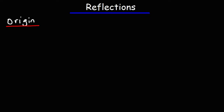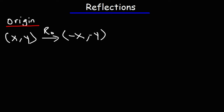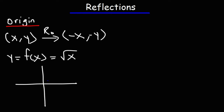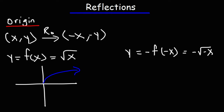Now let's talk about reflections over the origin. If we want to reflect an ordered pair over the origin, both x and y will change their values — they will change sign. Going back to our standard graph, y equals the square root of x, we're going to reflect that graph over the origin. We'll put a negative sign outside of f and inside of f as well, so this is going to be negative square root of negative x. The origin is the point (0, 0) — it's where the x and y-axes meet.